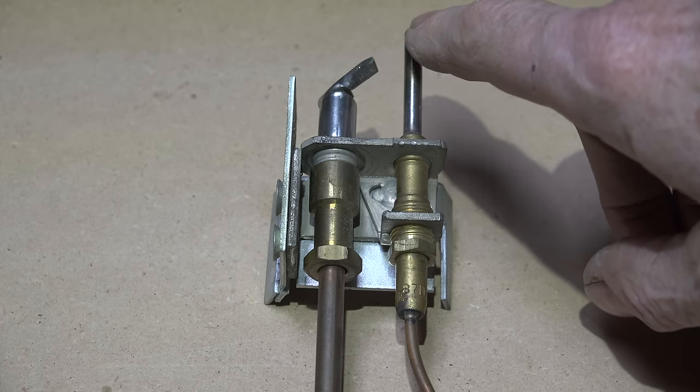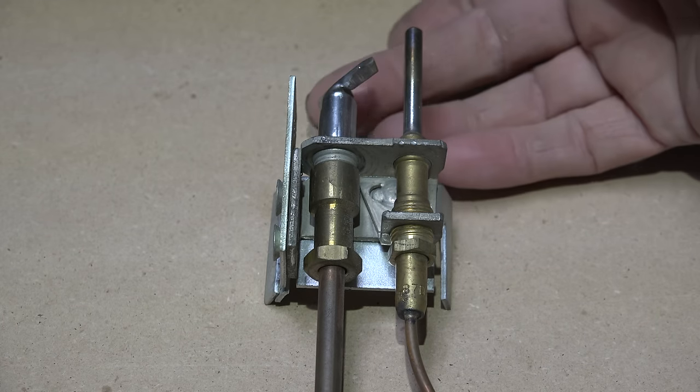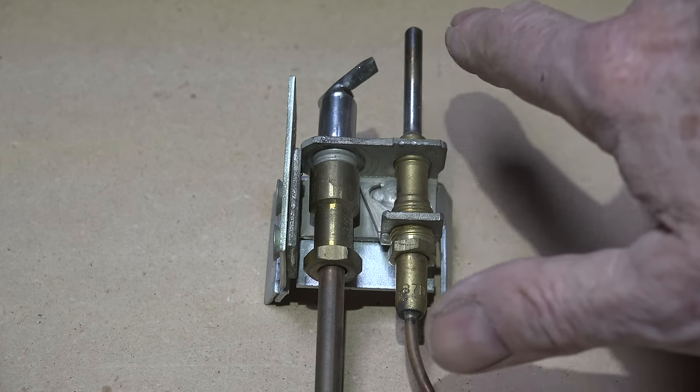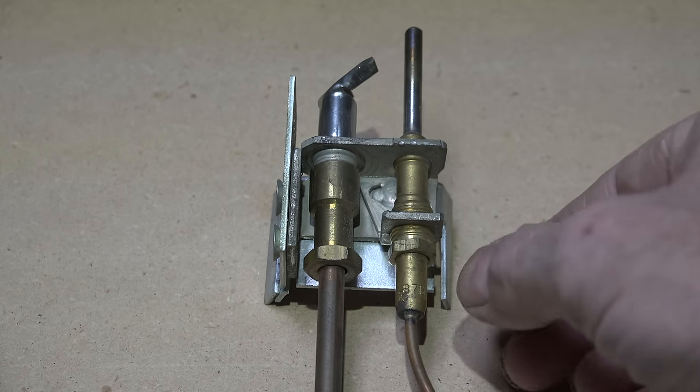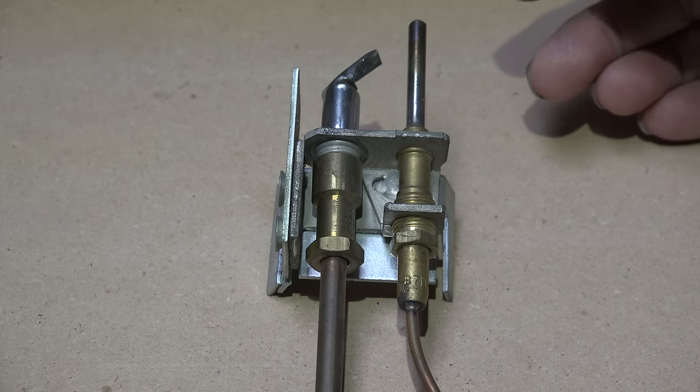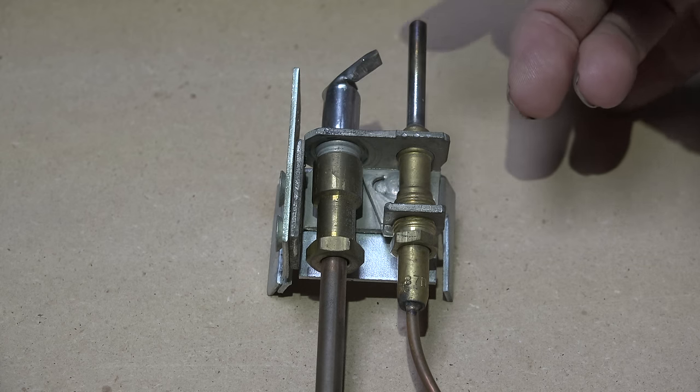It lights a burner with this part here, so this flame should be covering about 3/8 of an inch. This unscrews - you can unscrew this thing and pull it out. When it's put in there, it should be about that kind of height so that this covers at least 3/8 of an inch of the thermocouple when it's burning.